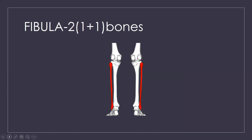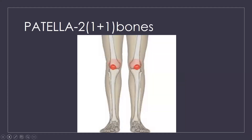Next is the patella, also known as the knee joint bone. You will find it in your knee — one on each side, so two patellae in total.